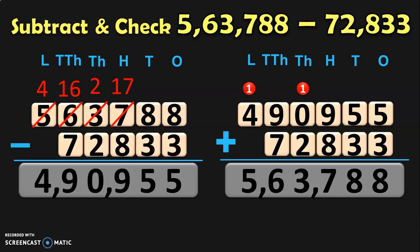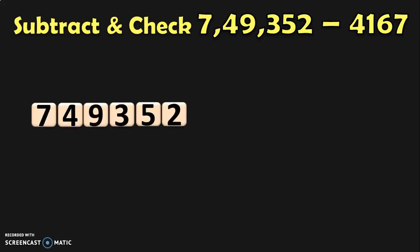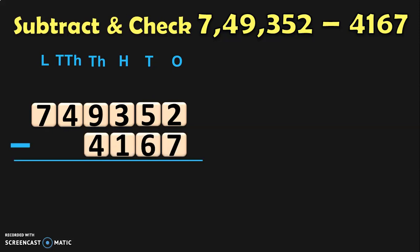Hope you have understood how we are doing this. Let us do many more examples to make this concept very clear. Next, we are going to subtract 7,49,352 minus 4,167. Here we are going to subtract a 4-digit number from a 6-digit number. Write down the bigger number and its place values so that you can write down the smaller number at its correct place. Now begin the subtraction from the 1s place.